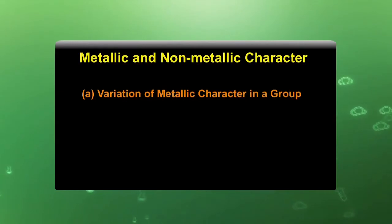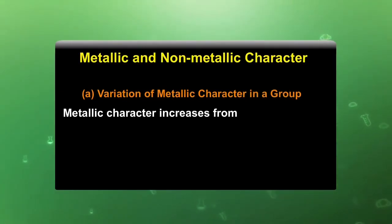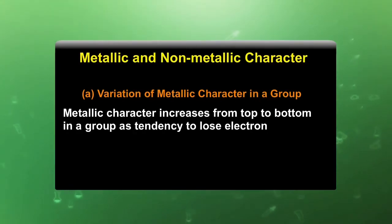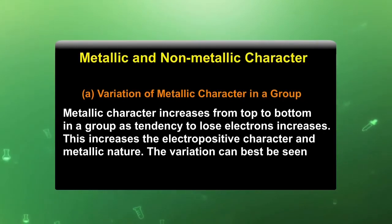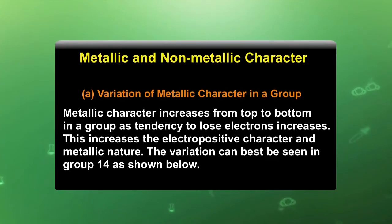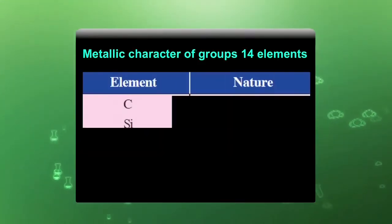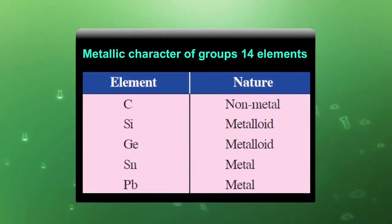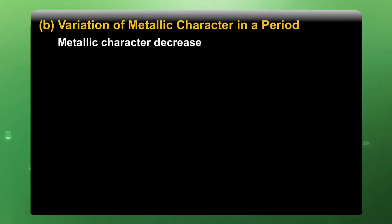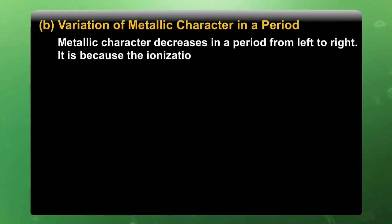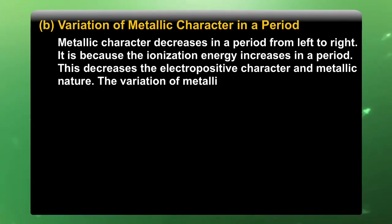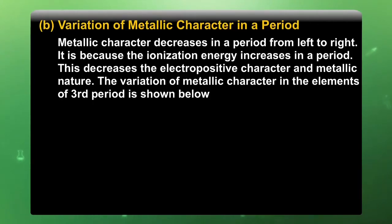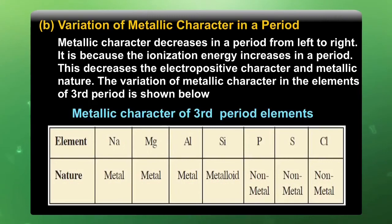Variation of metallic character in a group: metallic character increases from top to bottom in a group, as the tendency to lose electrons increases. This increases the electropositive character and metallic nature. The variation can be seen in group 14. Variation of metallic character in a period: metallic character decreases in a period from left to right because ionization energy increases in a period, which decreases the electropositive character and metallic nature. The variation of metallic character in the elements of the third period is shown below.